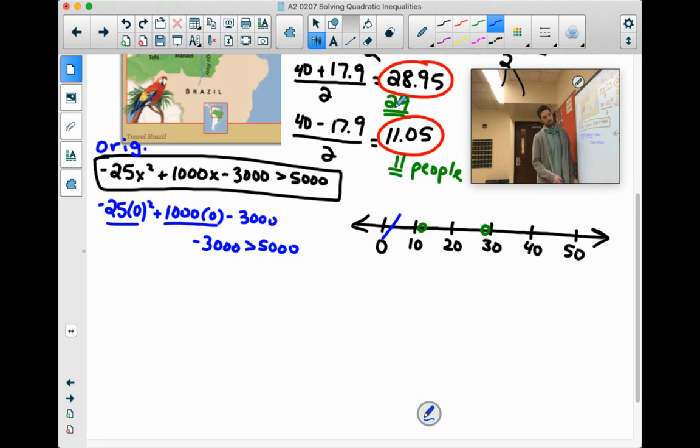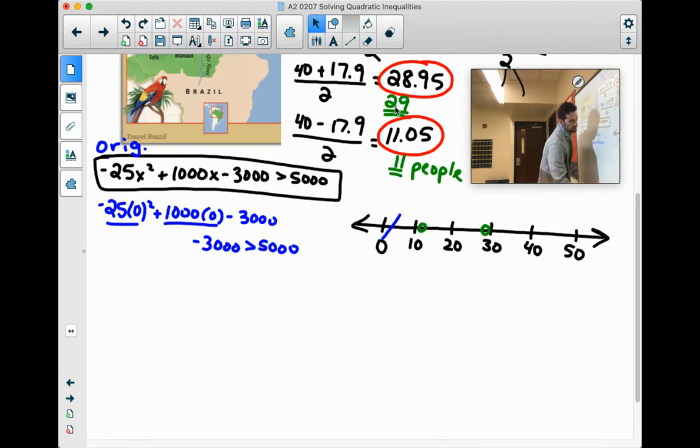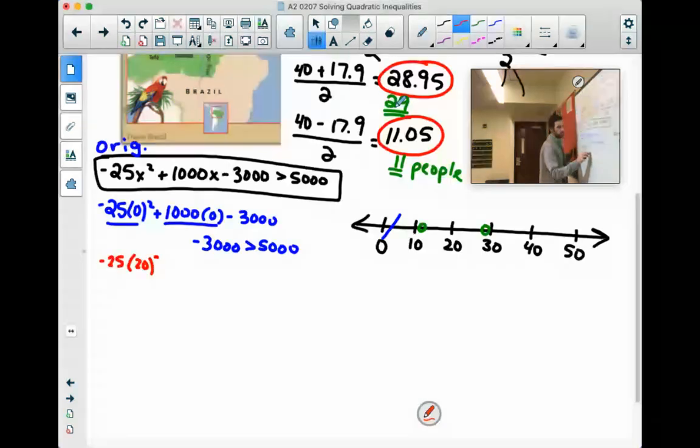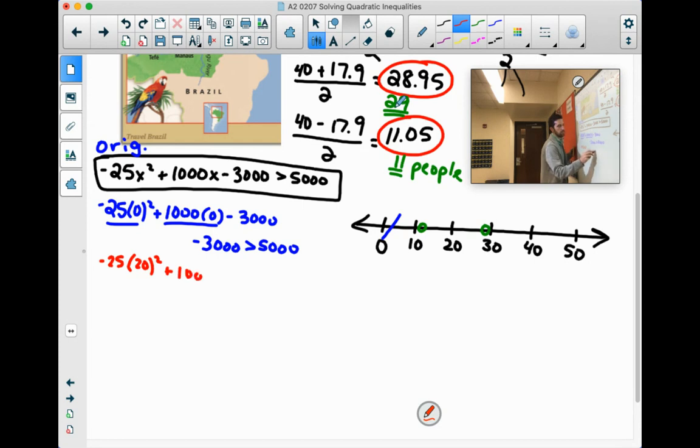Now let's look at the middle chunk. Something between 11 and 29. I'm going to go with 20 just because that looks like a pretty easy number to work with. So let's try that out.